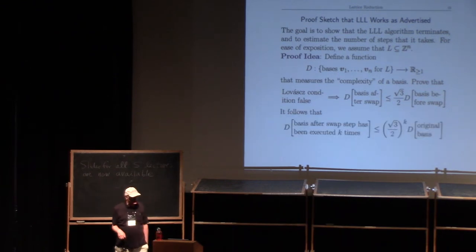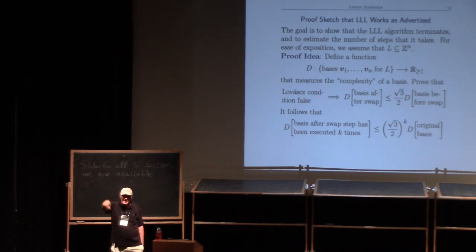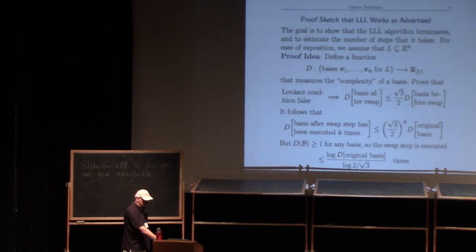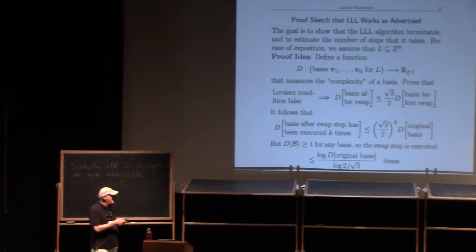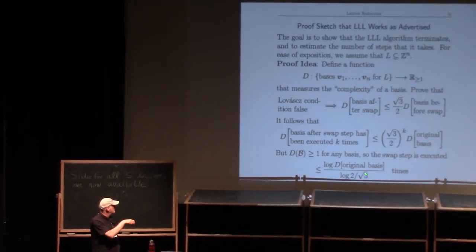The idea is to define a function measuring the complexity of a basis — a real number that's at least 1 — such that if the Lovász condition is false (when we do the swap step), the complexity after the swap is less than the complexity before, multiplied by √(3)/2 which is less than 1 (roughly 0.866). So if you do the swap step k times, the complexity is reduced by (√3/2)^k, which goes down exponentially.